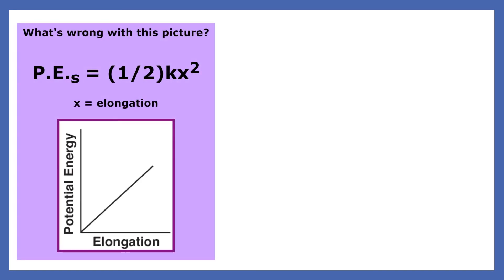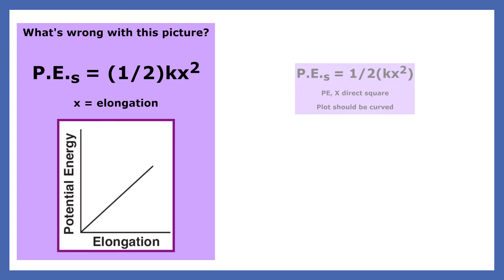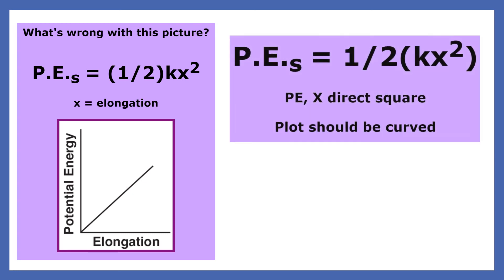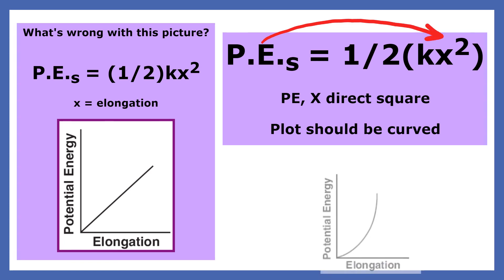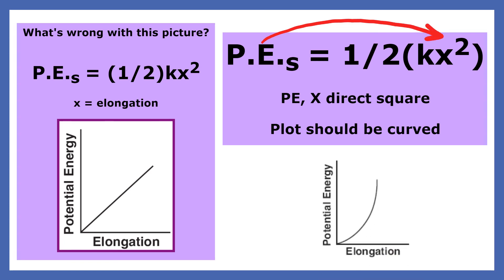What is wrong with this plot of potential energy and elongation or stretch? Since stretch is squared, the potential energy and elongation have a direct square relationship. The plot should have had an increasing slope.